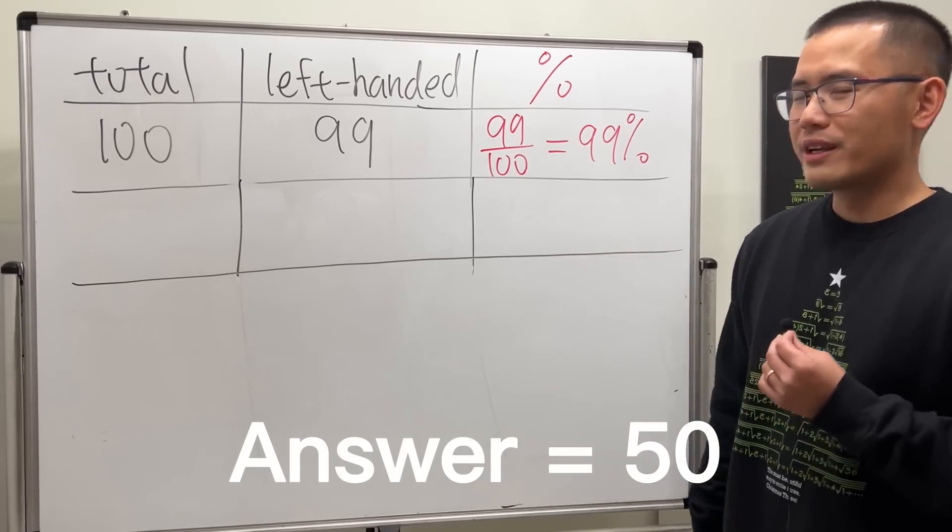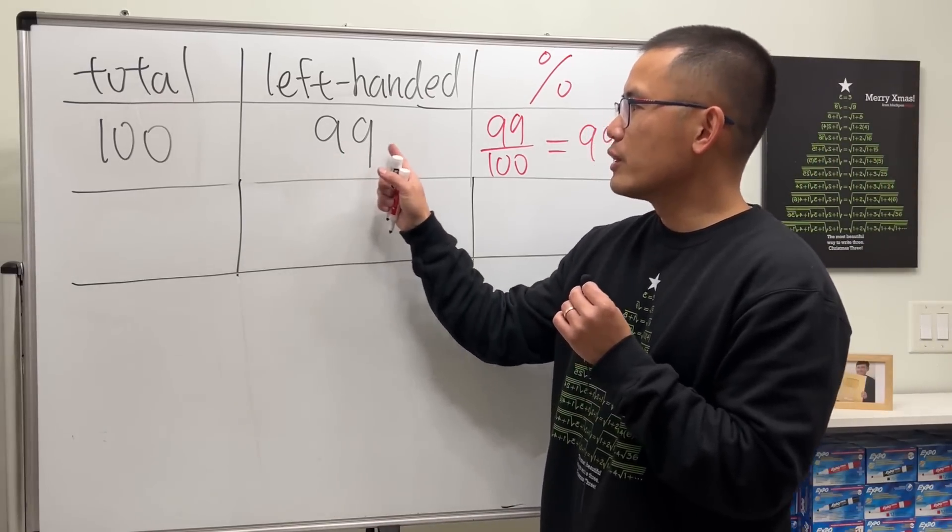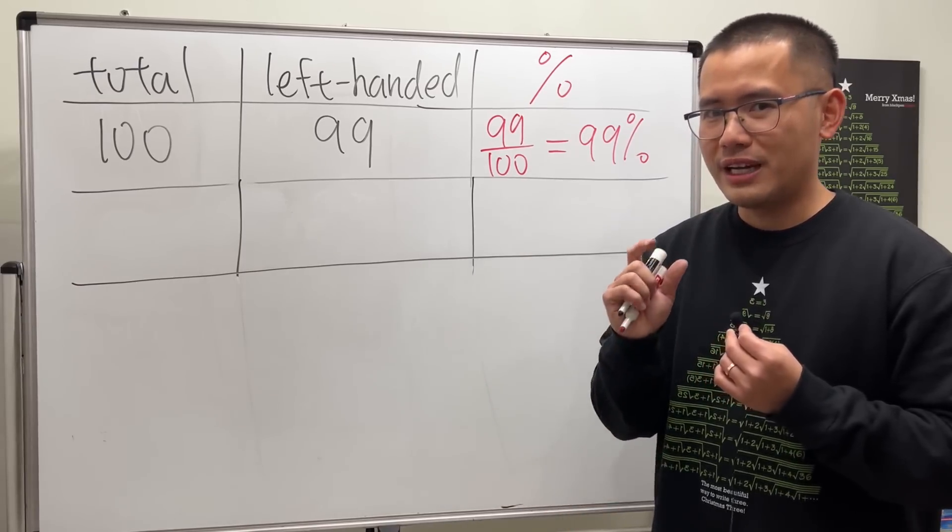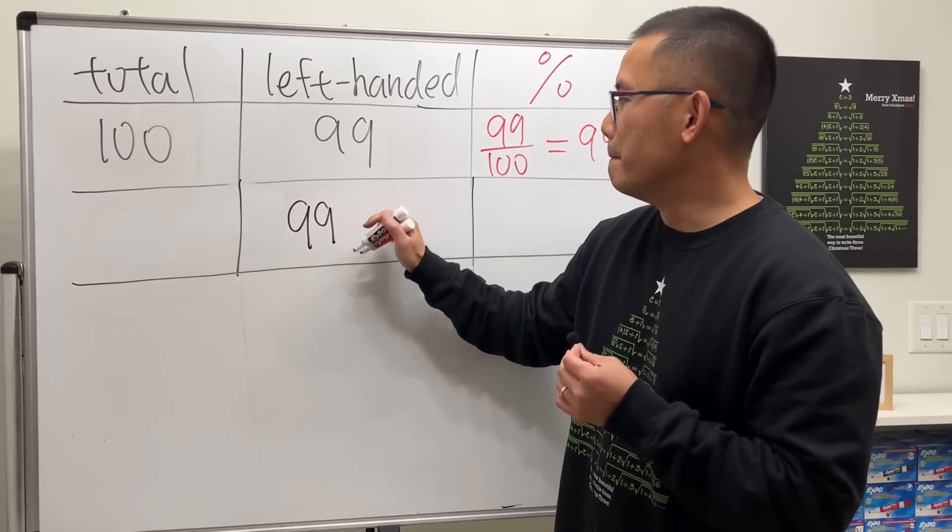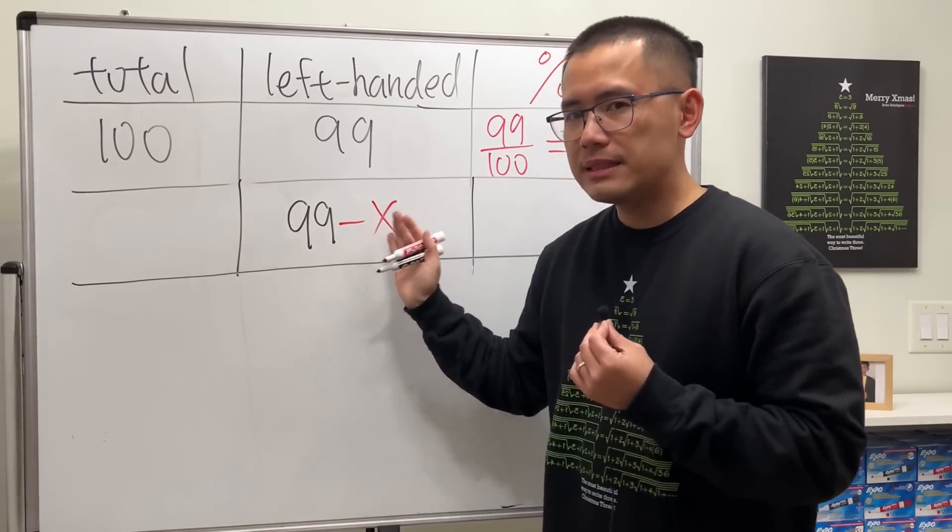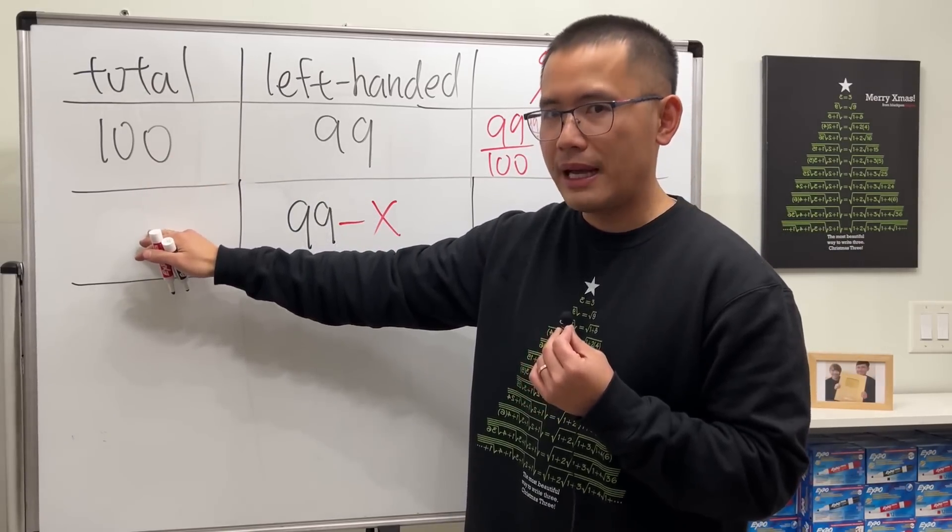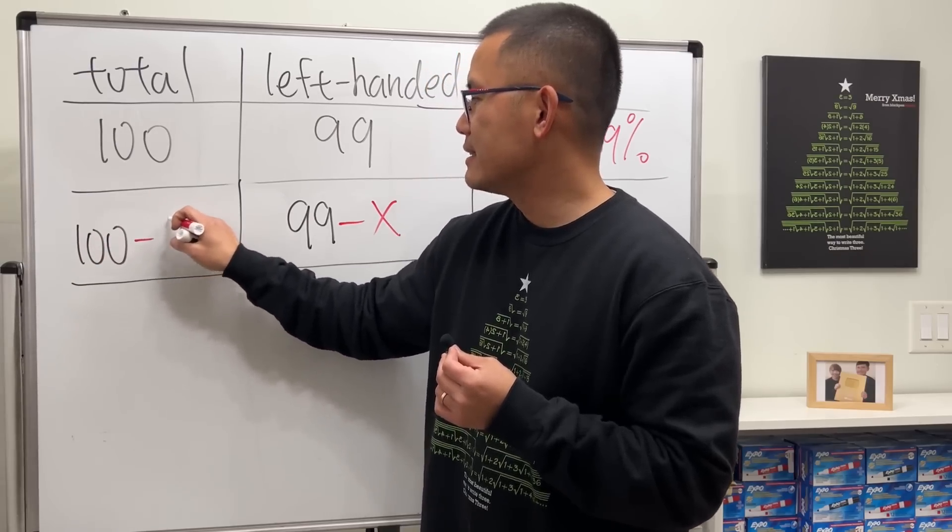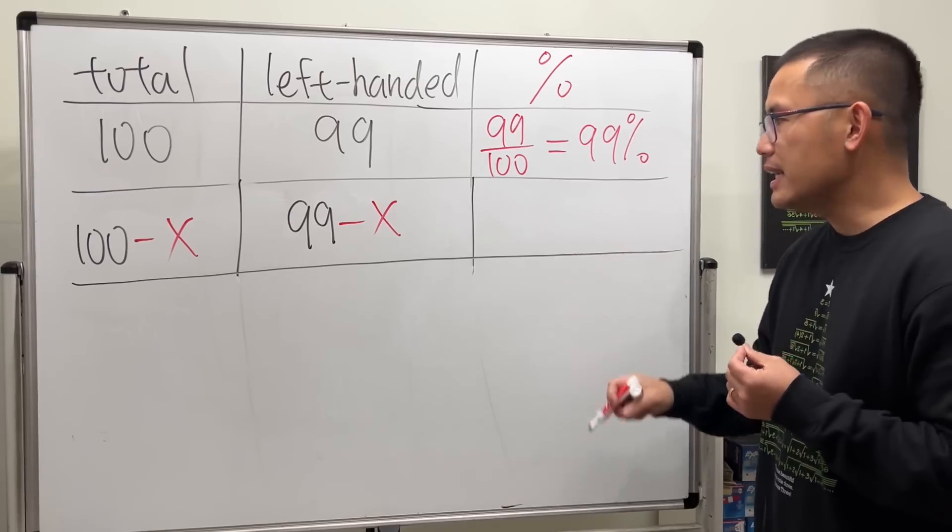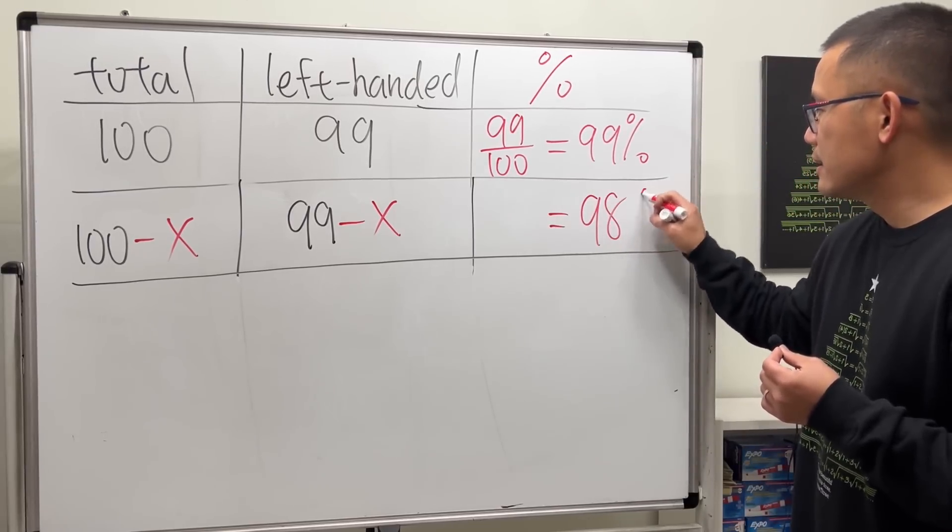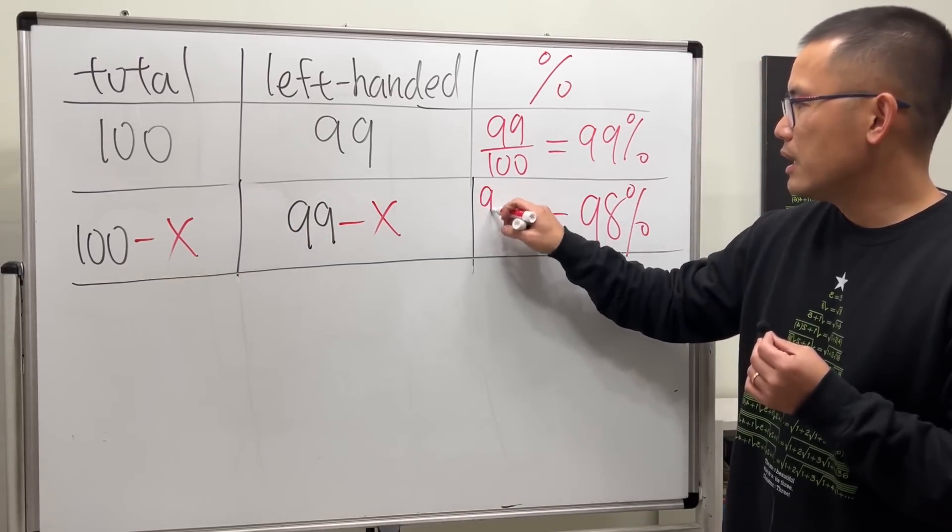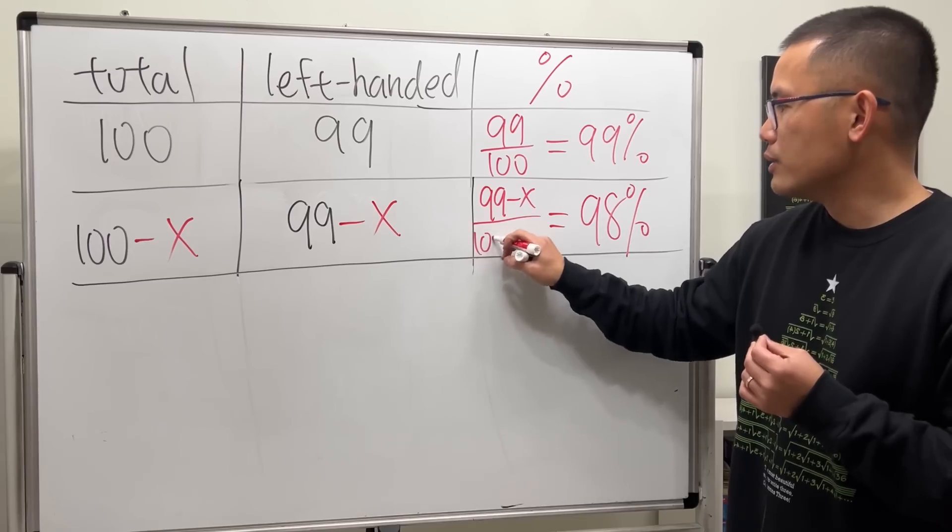But let's see how we can actually work it out with algebra. Check this out: originally we have 99 people who are left-handed. I need to remove some of them, but I don't know how many, so we can call that x. So this will be 99 minus x. And remember, if we take away x many people, the total will also go down by x, so this would be 100 minus x. Our goal is to end up with 98%. So we take the number of left-handed people divided by the total: (99-x)/(100-x).